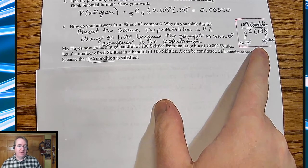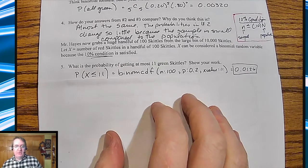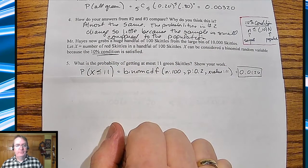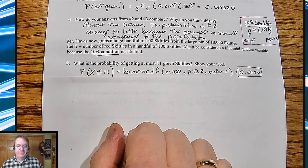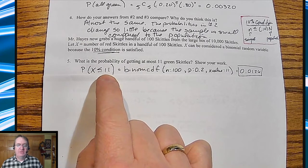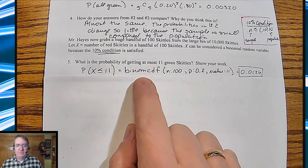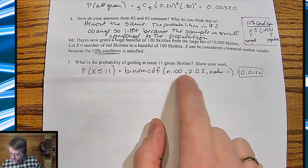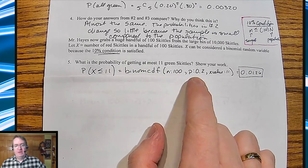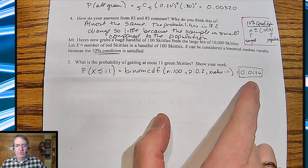What's the probability of getting at most eleven green Skittles? Actually this probably should be red, I'm sorry, you guys deserve better. All right, it's the same either way. So the probability of X being less than or equal to eleven, since we're talking about eleven or at most eleven, we're going to use binomial CDF. And this is one of the ways you can actually write this out so that it meets the condition. So n is 100, p the probability is 0.2, x value is 11, boom, I get 0.126.